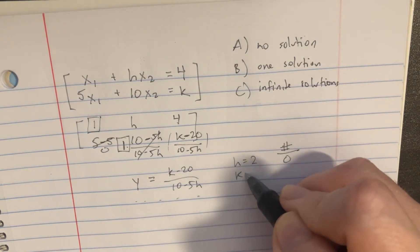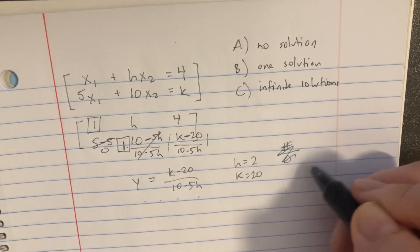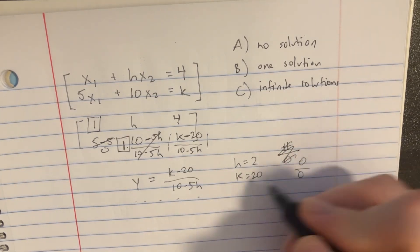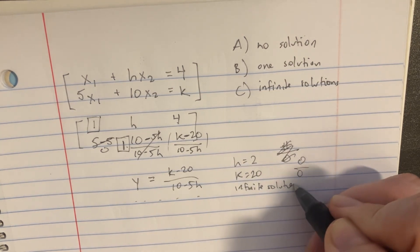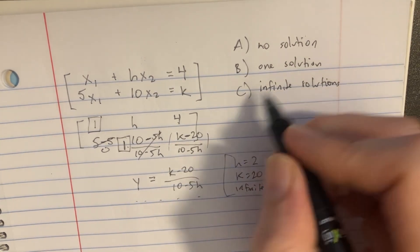So if we make k equal 20, then we would actually just get 0 on top, 0 divided by 0. So this gives us infinite solutions. So this is one of our answers here. That would be c.